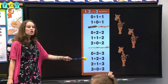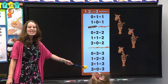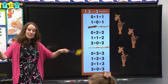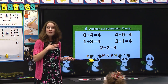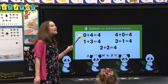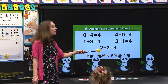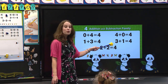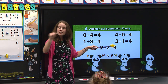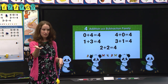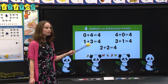The three addition family. [Students echo: The three addition family.] Zero plus three equals three, one plus two equals three, two plus one equals three, three plus zero equals three. Now stand up and let's look at our next family — the four addition family. Zero plus four equals four, one plus three equals four, two plus two equals four, three plus one equals four, four plus zero equals four. Have a seat.